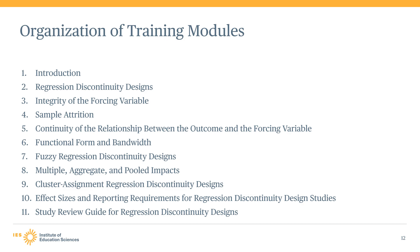The tenth module describes a few unique considerations when estimating effect sizes from regression discontinuity design studies and when reporting evidence from these kinds of studies. The eleventh and final module describes the study review guide used to document findings from a WWC review of a regression discontinuity design study. This final module discusses the purpose of the study review guide, its major components, and how you as a reviewer would enter information from a study into that guide.